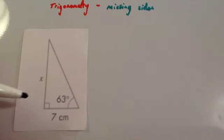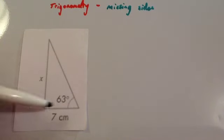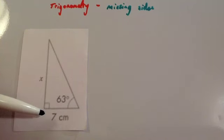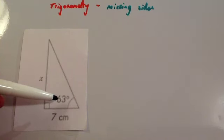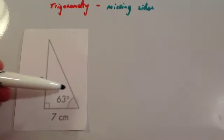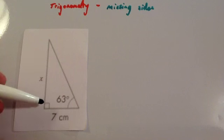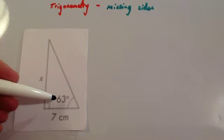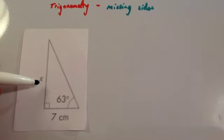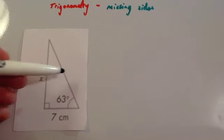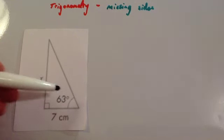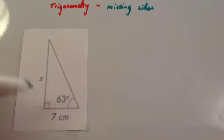Here we've got a right-angled triangle, and we want to find the height. We've been given a length of one of the sides and we've been given an angle. Therefore, we know it's going to be a trigonometry question, because it's a right-angled triangle with an angle and a side, and you're trying to find another side. If it was two sides and trying to find the third side without the angles, that would be Pythagoras, but this is a trigonometry question.